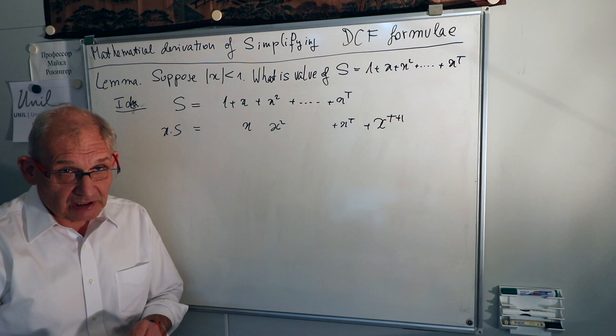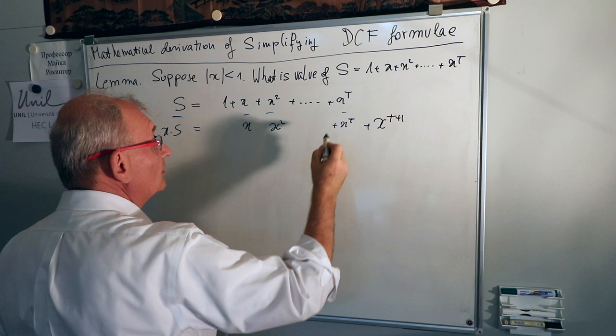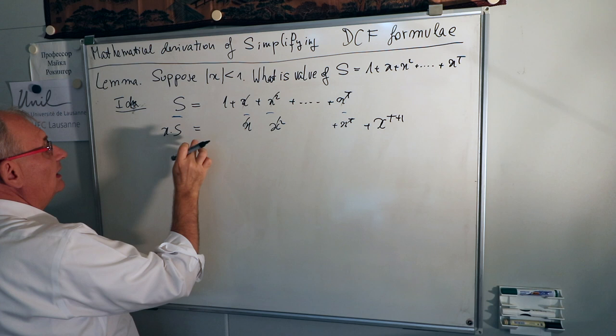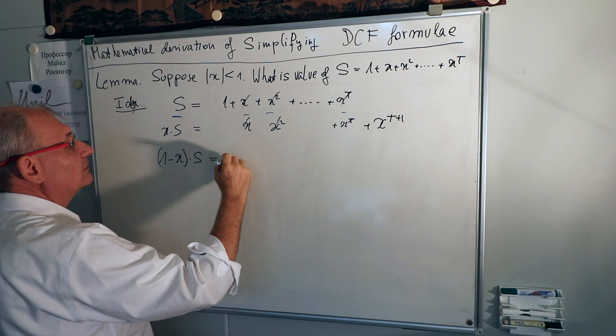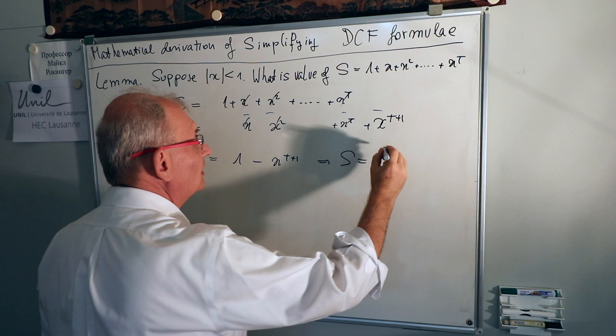Taking S minus xS, we get: x minus x cancels, x squared minus x squared cancels, x^t minus x^t cancels, and all intermediate terms simplify. We are left with S minus xS, which is the same as (1 minus x) times S, and this equals 1 minus x to the power t plus 1.